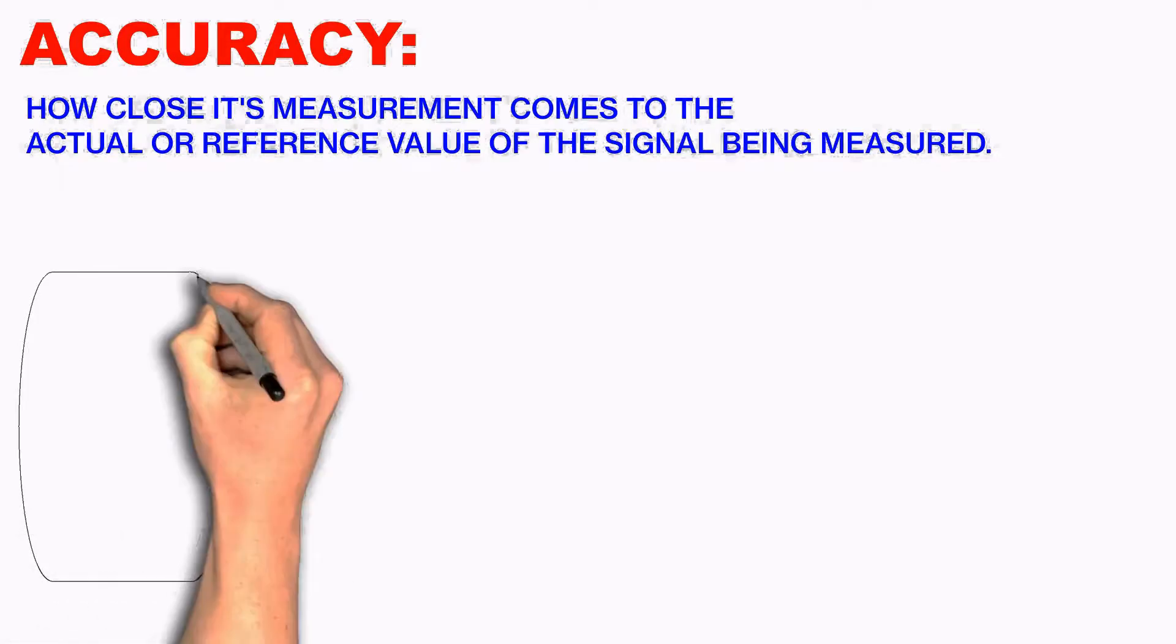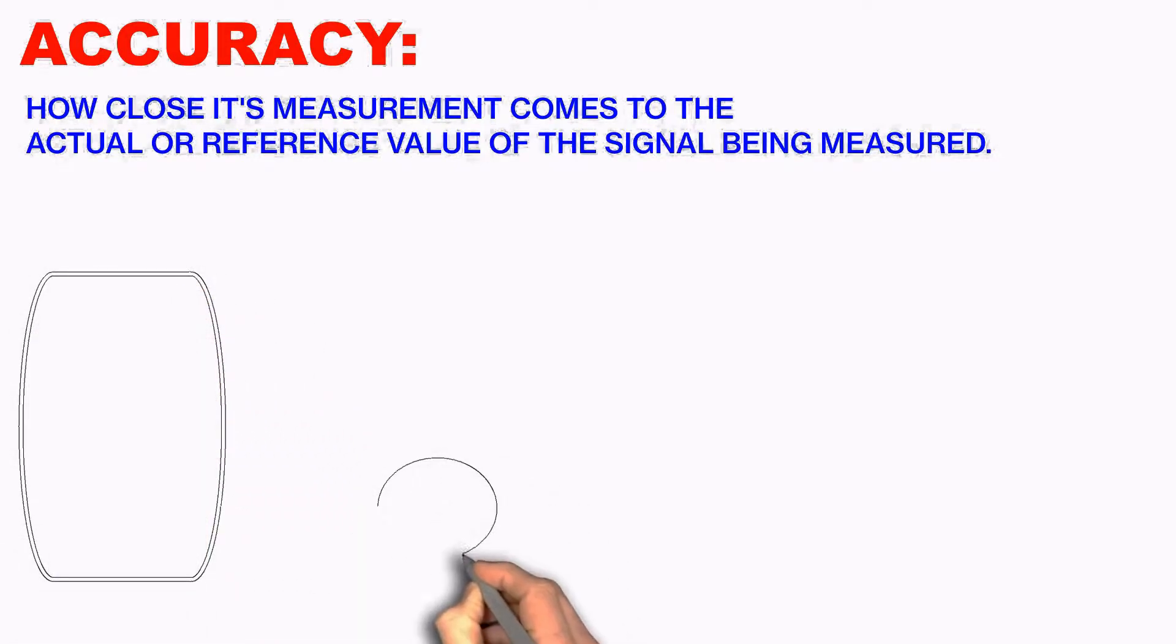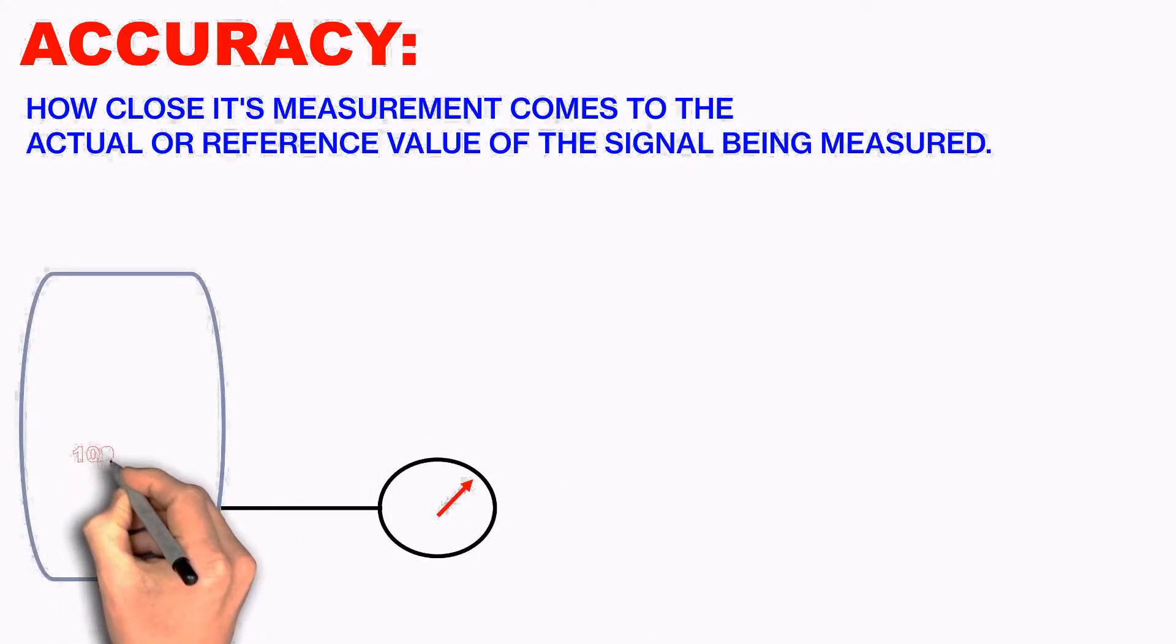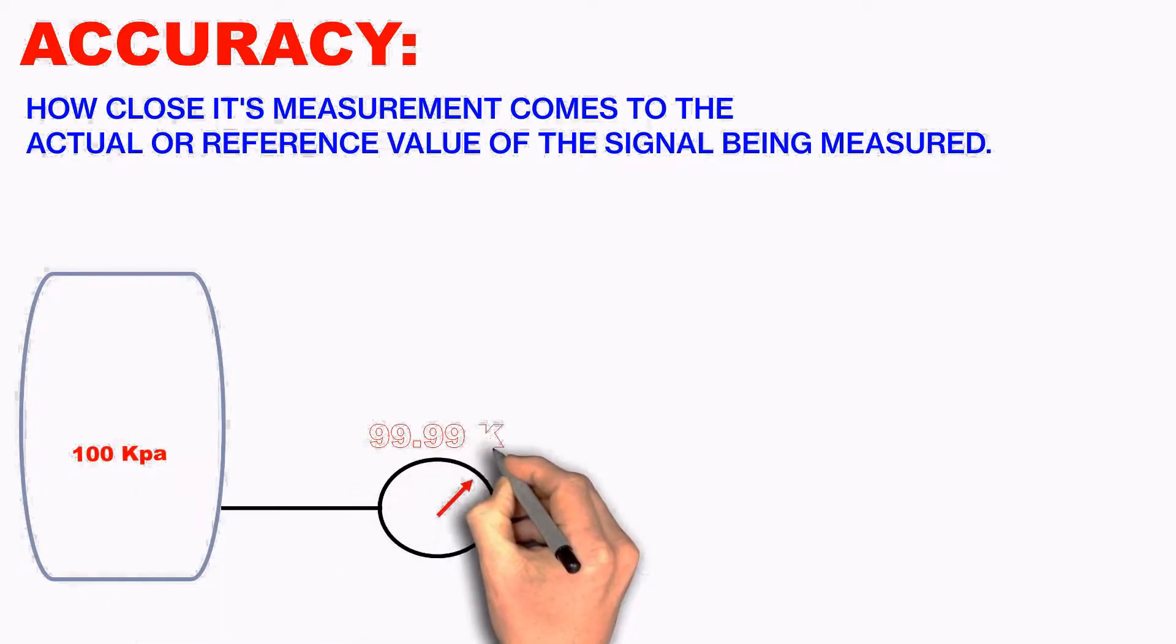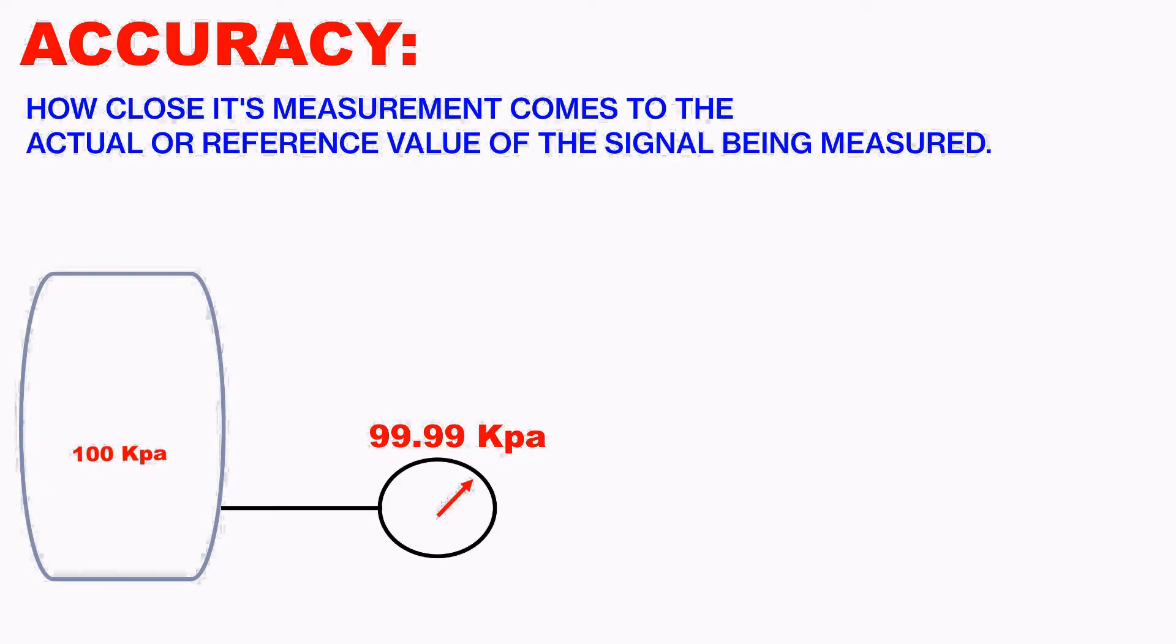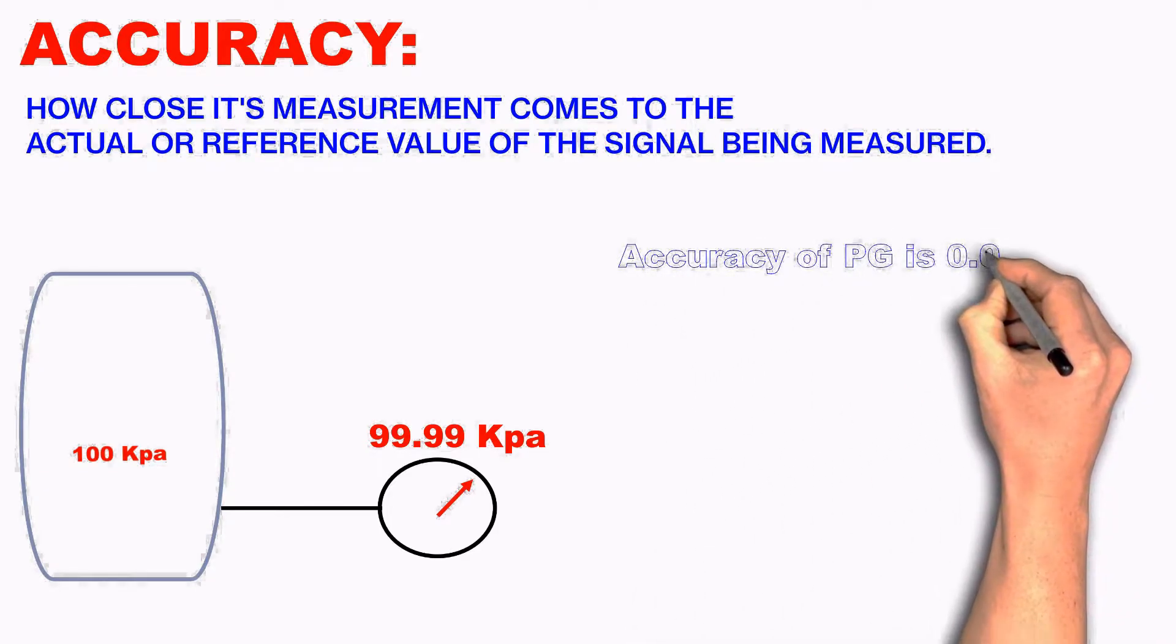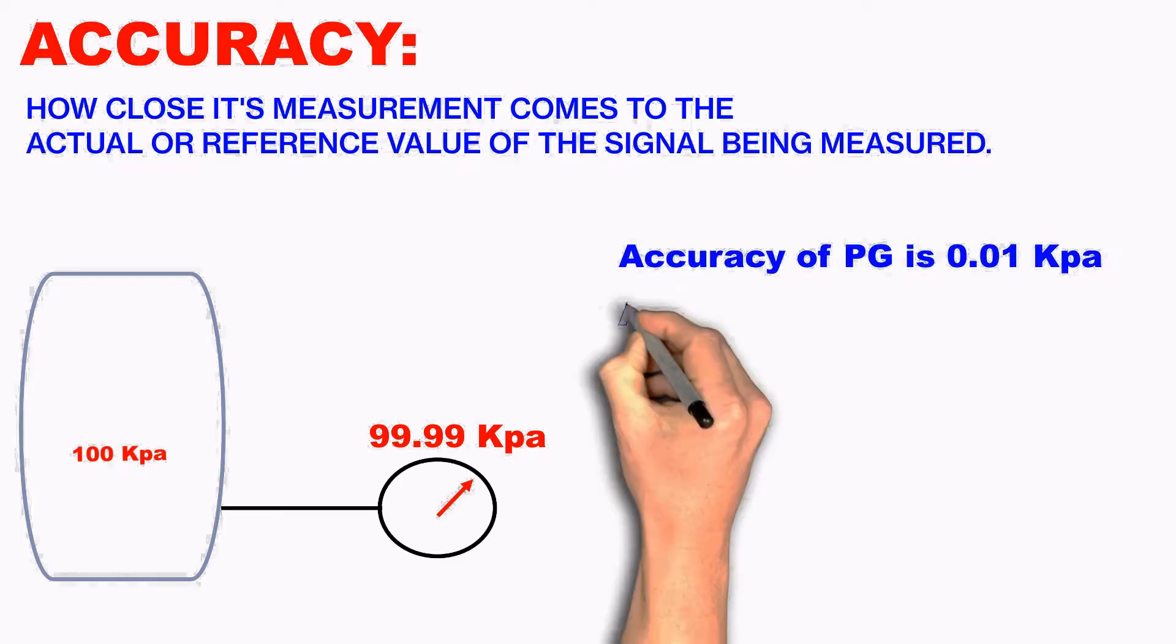In our case, let's see a vessel in which actual pressure is 100 kPa, and I have a pressure gauge or a pressure transmitter. And now it's measuring the pressure as 99.99 kPa. So the actual pressure of the vessel is 100 kPa, whereas the pressure equipments like pressure gauge or pressure transmitter reads 99.99 kPa. So the error here is 0.01, and that's the accuracy.